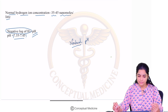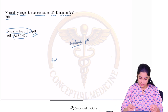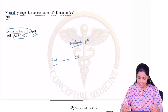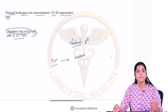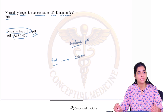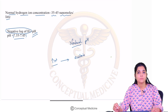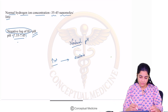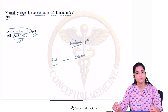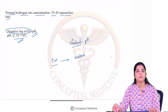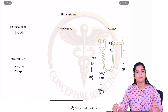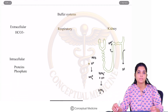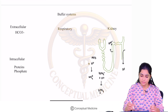Any excess of hydrogen ion is what we call acidosis. Whenever the acid content in the body increases, it has a lot of side effects. The body's aim is to maintain this pH in a neutral range from 7.35 to 7.45. This is brought about by what we call your buffer systems.